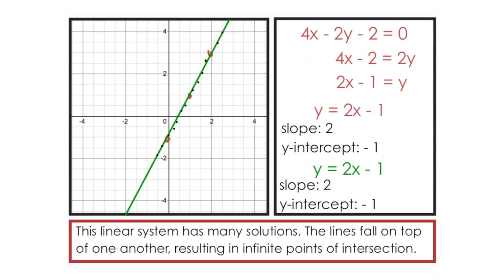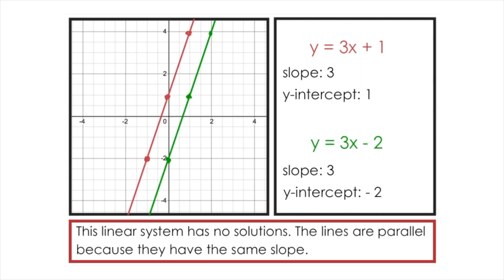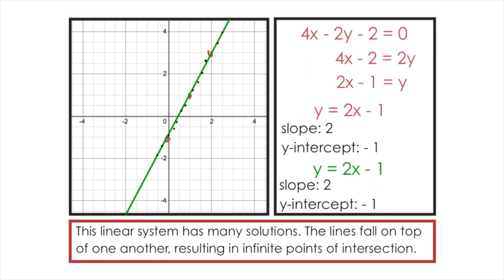So in this video, we looked at three different cases for a linear system containing two lines. If the slopes are not the same, the lines intersect once — one solution. If the slopes are the same but the y-intercepts are not, the lines are parallel and never intersect — no solutions. Finally, if two lines have the same slope and same y-intercept, they fall on top of one another, producing an infinite number of points of intersection — infinitely many solutions.